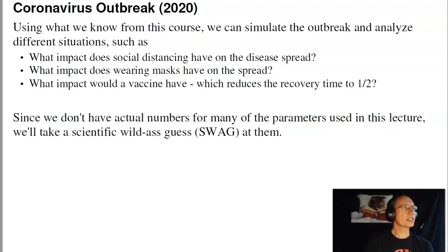So what I want to do in this lecture is look at the coronavirus outbreak in 2020 and use what we know in this course to simulate that outbreak. And once we simulate it, ask questions such as: what impact does social distancing have on the disease spread? What impact does wearing masks have on the spread? What impact would a vaccine have? Say if the time to recover from the coronavirus drops by a half or a fourth. And since we don't have any actual numbers from any of the parameters used in this lecture, we're going to take a scientific wild ass guess or SWAG at them.